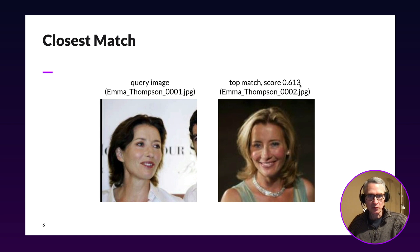So this is the query image on the left, Emma Thompson one. And Emma Thompson two here is the closest match on the right. The score was 0.613. So a pretty high score for showing that the vectors for these two are pretty close together.